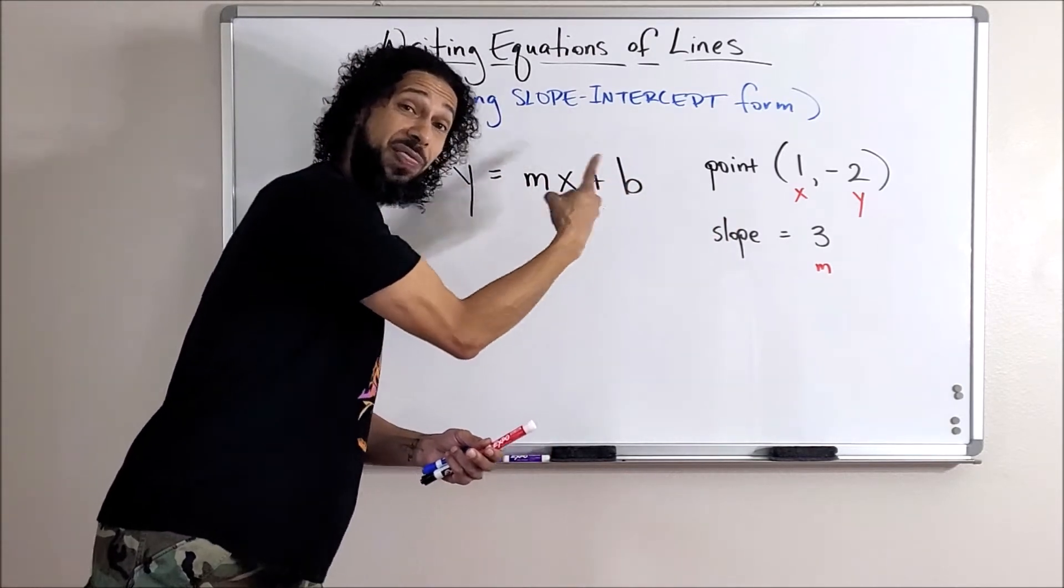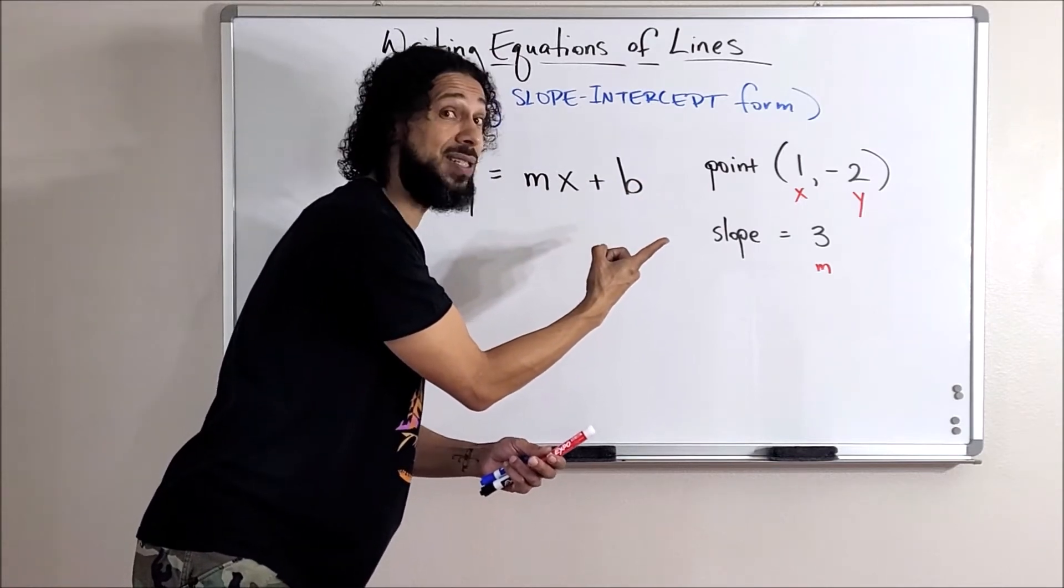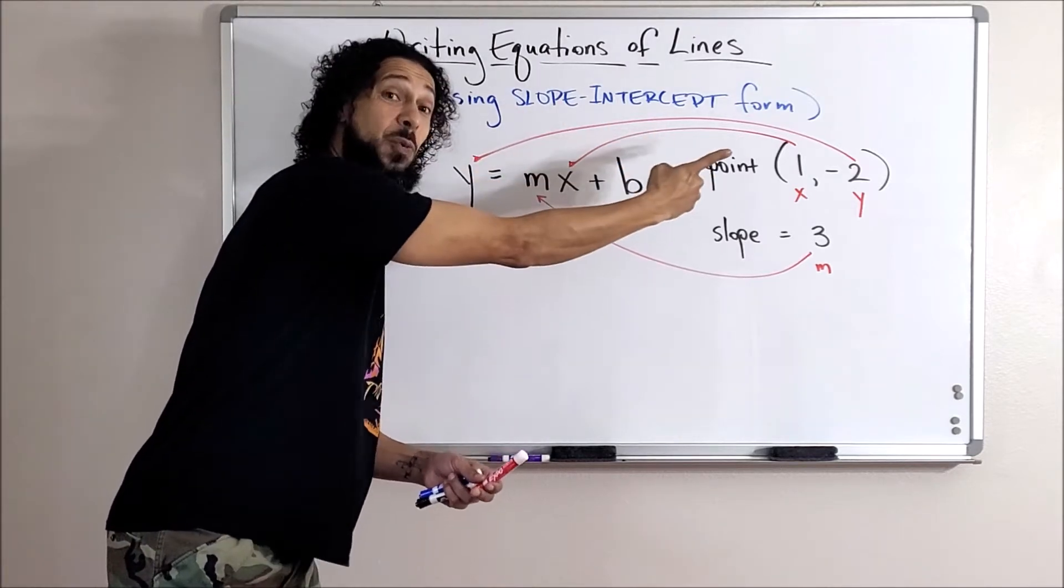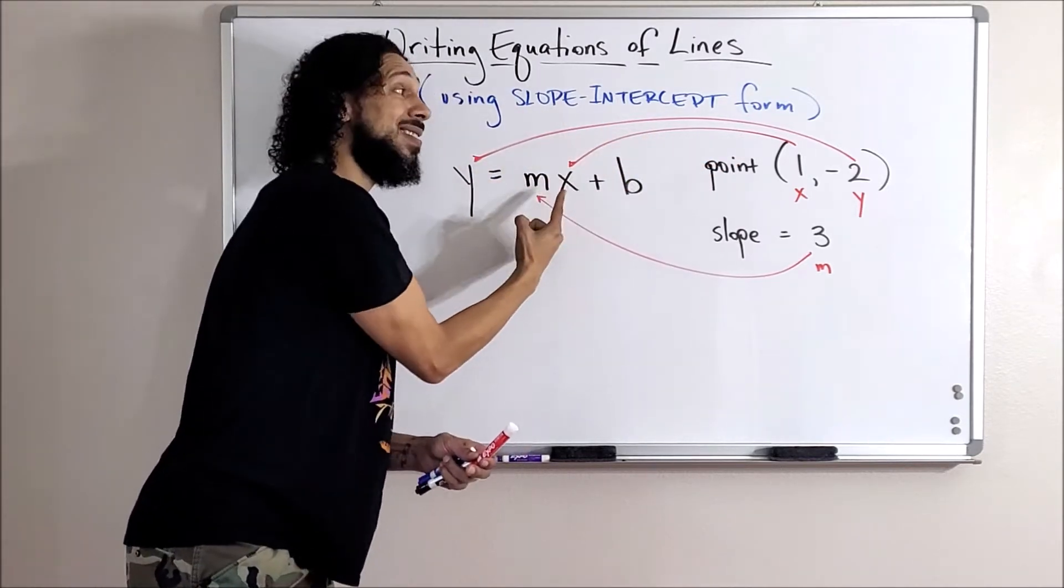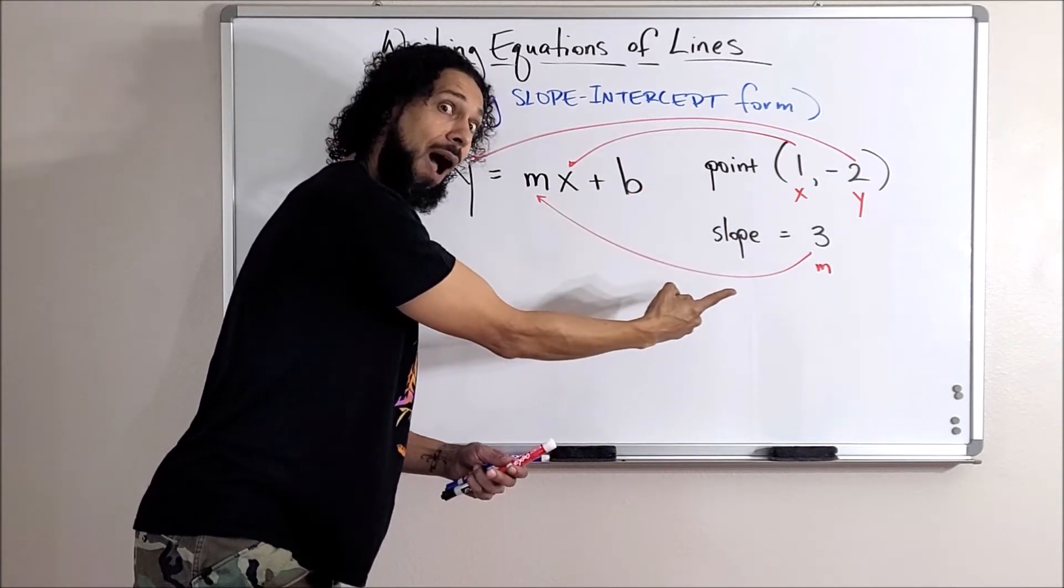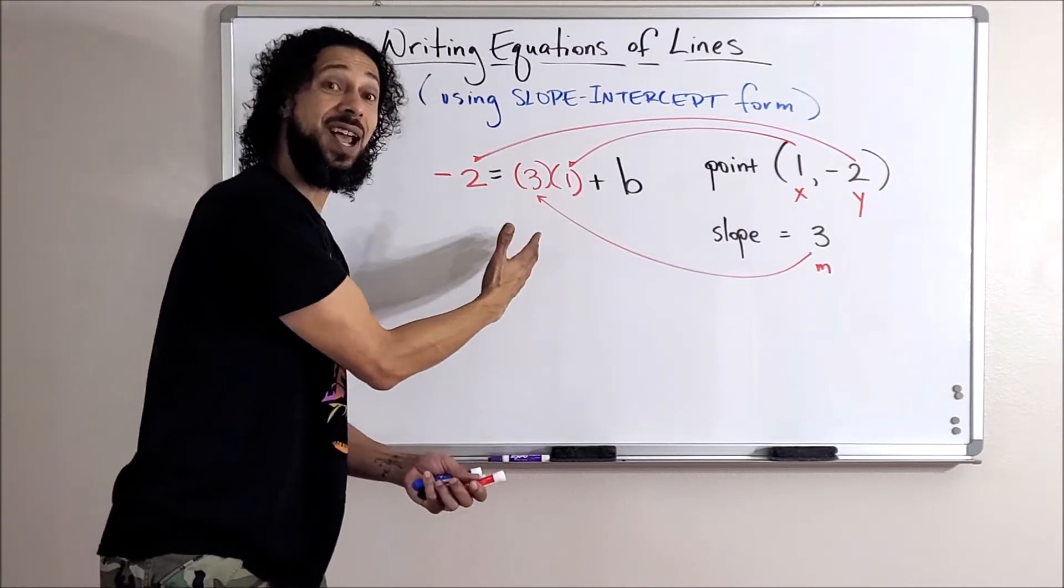Same with the slope, watch this. Yes, I can take this y and replace it with that y coordinate, take this x and replace it with that x coordinate, and take this m and replace it with that slope coordinate like this. Yes, and that gives me an equation I can solve for b, and then I'll have all the information I need.